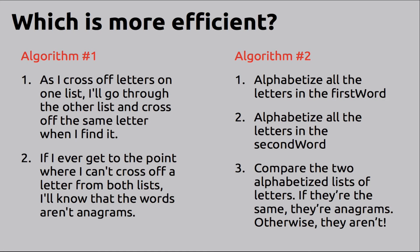This is one of those areas of computer science where it's possible to do some math to determine theoretically how long each of these algorithms will take, but that would require more math than we want to do at this point. It's also possible to write a short program to test our two different algorithms. We don't need to go into the details of this program — the syntax of the code isn't our primary interest here. We're just interested in illustrating the fact that different algorithms can be more or less efficient.